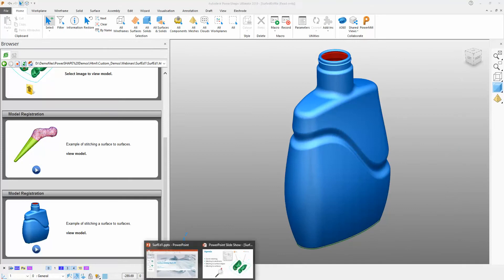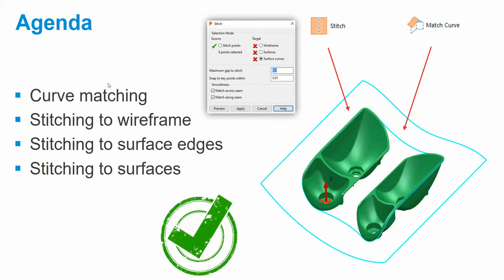To recap on what we've seen: we've seen curve matching - the ability to match a 3D surface out onto the 2D element of a 3D curve, taking only the X and Y or Y and Z components to get the stitch condition we want. We've been able to stitch directly onto 3D wireframe, stitch directly onto surface edges, and use a surface as a kind of blanket to pull another surface onto it - which was that last example. I hope that's been useful. Thank you very much for watching.